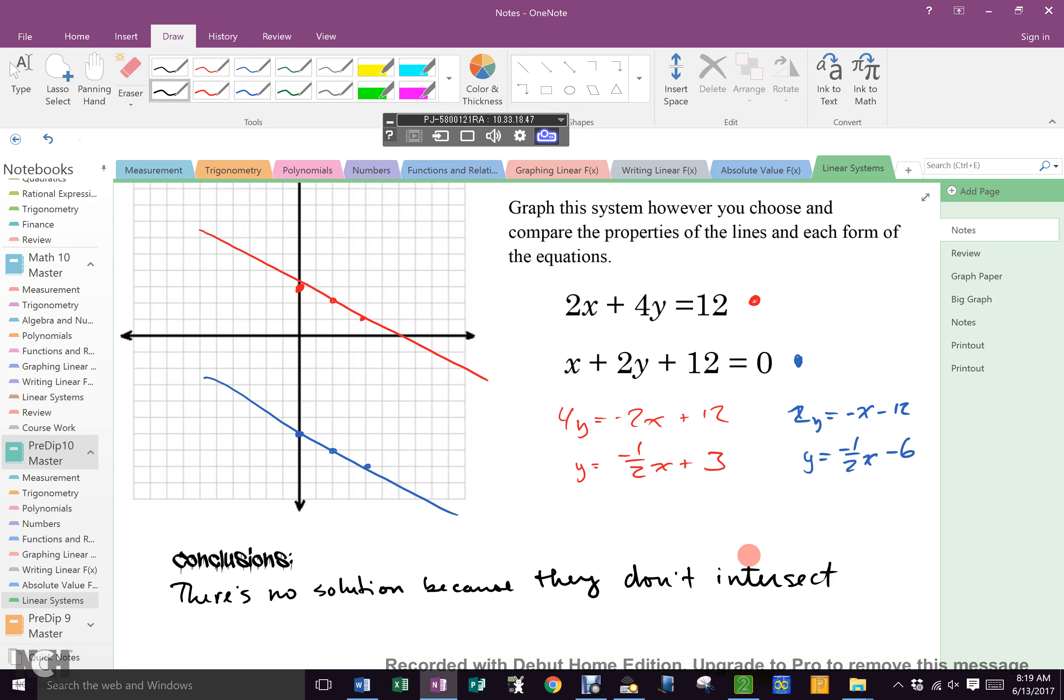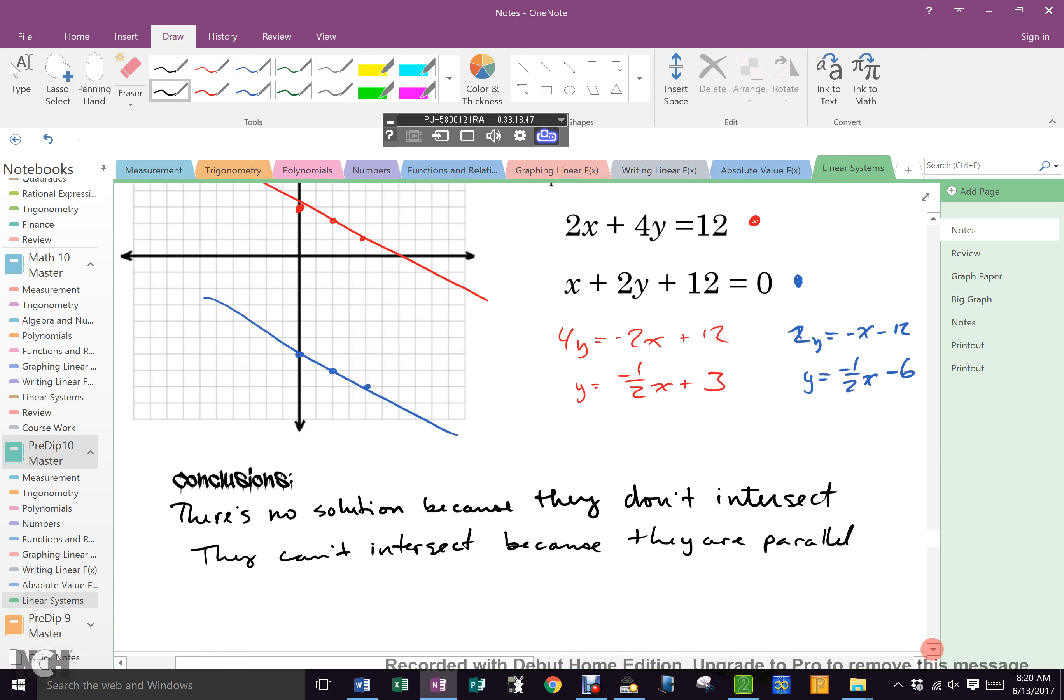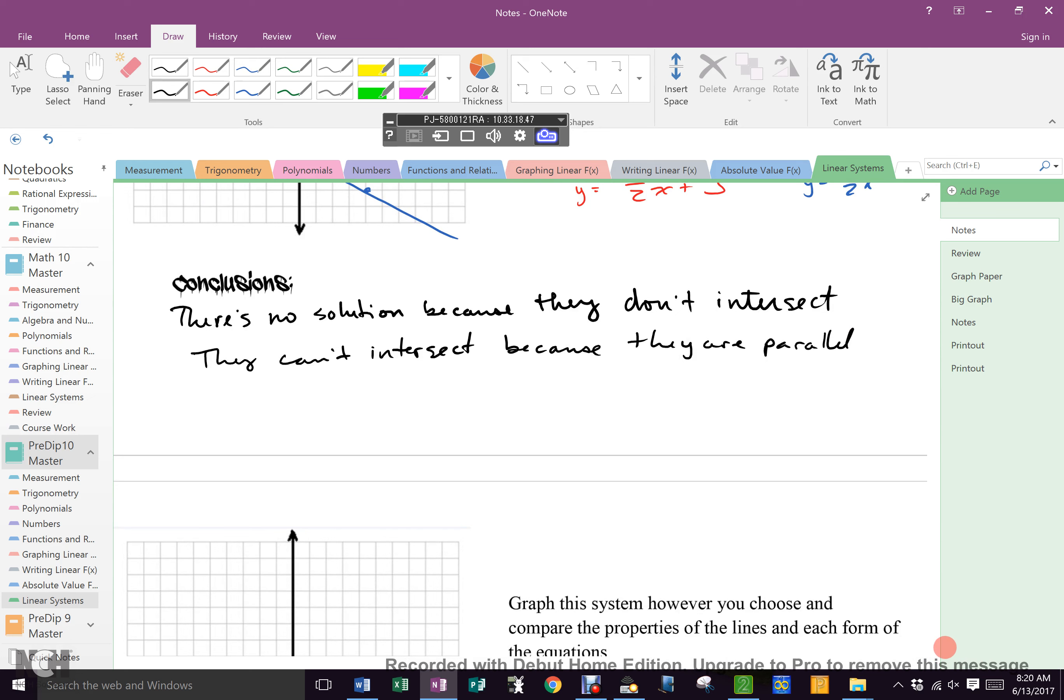There's no solution because they don't intersect. Why don't they intersect? They can't intersect. Why? Okay. Excellent. Everybody cool? So what are our choices right now? In some systems, there can be one solution in linear systems. In some linear systems, there can be no solutions because they might be parallel. Let's do the third one. Shouldn't be too hard to figure out.